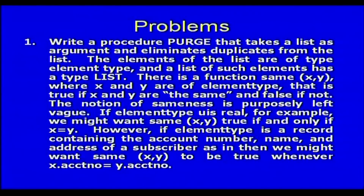Here is an example program: write a procedure 'purge' that takes a list as argument and eliminates duplicates from the list. The elements of the list are of type element_type — we have not defined what type; it could be integer, a node, or anything — so you must write it generally. There is a function same(x, y) where x and y are of element_type, which is true if x and y are the same and false otherwise. For example, if element_type is real, same(x, y) is true if x equals y; if element_type is a record with account number, name, and address, same(x, y) is true when x.account_number equals y.account_number.